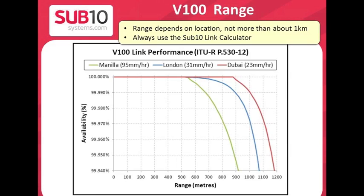Planning of the V100 link is very important. The range depends on your geographic location, for example due to different rainfall — in general it won't be more than about one kilometre, but you should always use the Sub-10 link calculator to check this. The graph here shows three curves of percentage availability for a given range. The green curve is for Manila in the Philippines, which has an extremely high rainfall of 95 millimetres per hour. The blue curve is for London and the red curve is for Dubai. In Manila, for 99.99% availability, the maximum length will be about 670 metres; in London about 900 metres; and in Dubai about 1 kilometre.